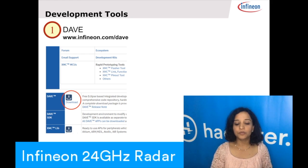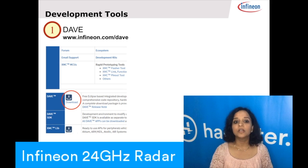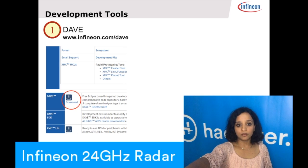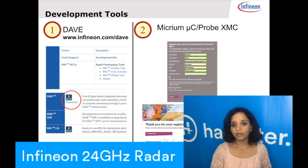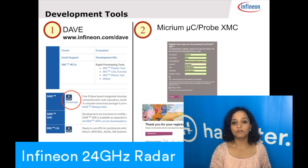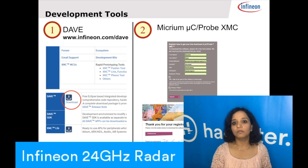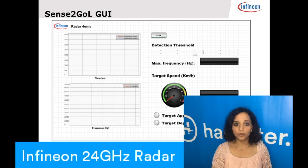DAVE also allows you to see the register maps, view all the apps, and we have plenty of pre-built apps which give examples of how you can use them. The second tool you would need is Micrium Probe. Micrium Probe is a debugger which shows the GUI of the XMC. When you download Micrium from Infineon's website, you'll fill out a registration form, accept the software license, and get the latest version.